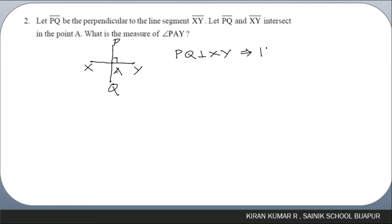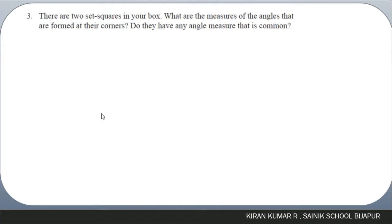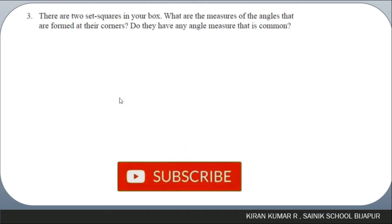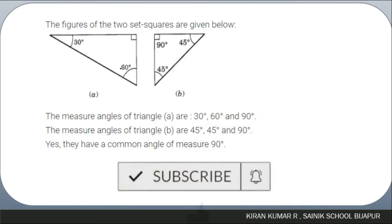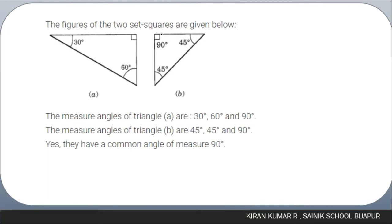Question number three: there are two set squares in your box. What is the measure of the angles formed at their corners, and do they have any angle measure in common? The first set square has angles of 30 degrees, 60 degrees, and 90 degrees. The second set square has 45 degrees, 45 degrees, and 90 degrees. The common angle between these two figures is 90 degrees, so both represent right-angled triangles.